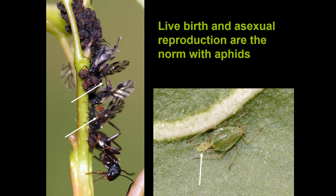Live birth and asexual reproduction are the norm with aphids. Here we have a couple of pictures — the one on the right shows a wingless aphid giving live birth, and the one on the left shows two winged aphids also giving birth.